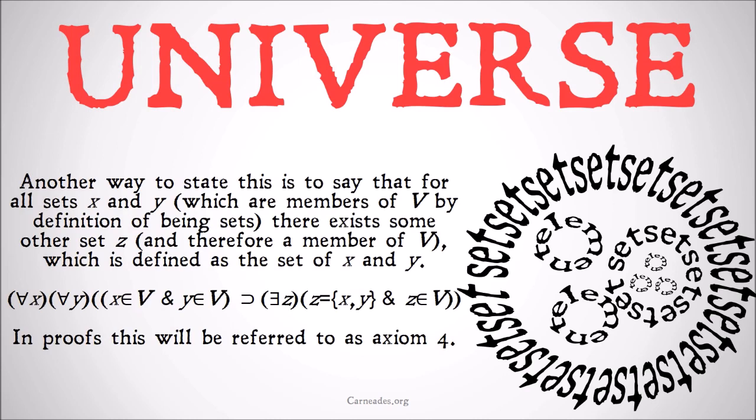Another way to state this is to say that for all sets X and Y, which are members of V by definition being sets, there exists some other set Z, and therefore a member of V, which is by definition the set of X and Y. Or in other words, for all X and for all Y, X is a member of V and Y is a member of V, so X and Y are sets, implies that there exists some Z such that Z is identical to the set of X and Y and Z is a member of V.